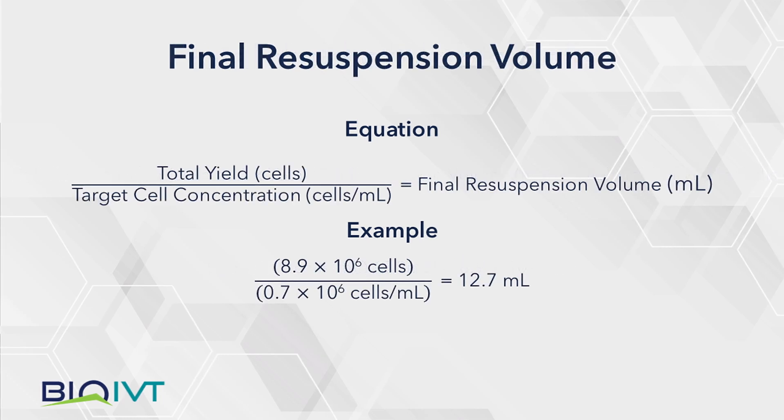The target cell concentration to be used for plating cryoplatable hepatocytes is 0.7 times 10 to the sixth cells per milliliter. To achieve the target concentration, medium will be added using the following method. First, divide the total cell yield by the target cell concentration.